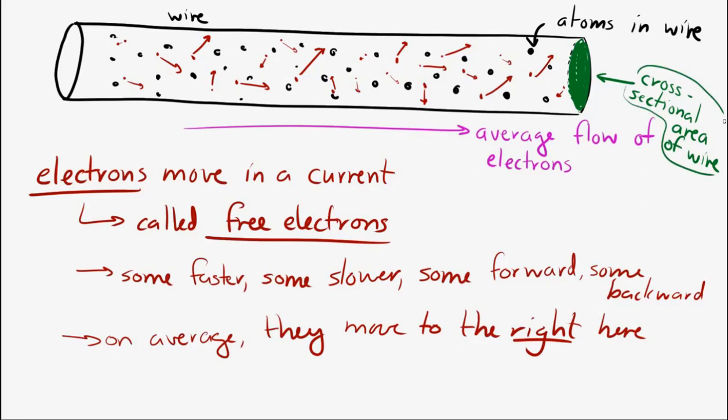So, I said that some of the electrons are moving fast, some are moving slow, some are moving forward, backward. The drift speed is the average speed of these charge carriers, or electrons, in a wire. So, it's the average of all of this.